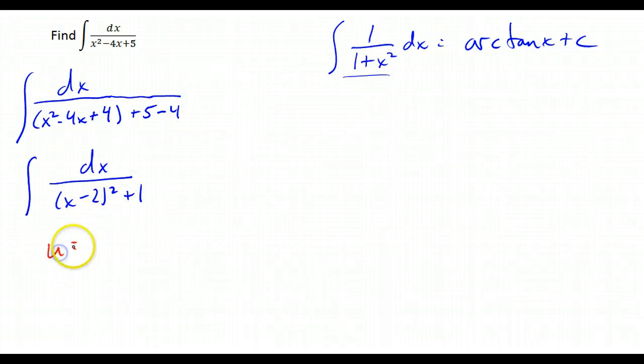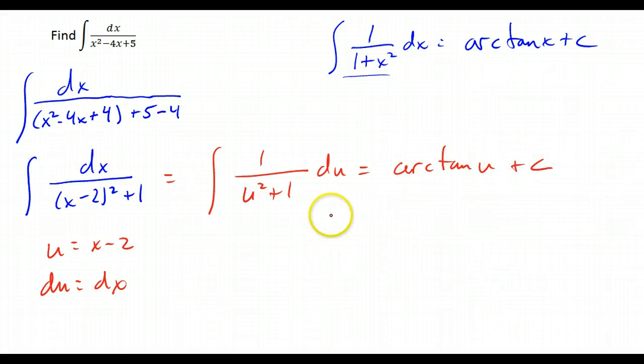So we'll let u equal x minus 2, du is dx, and I can rewrite this as 1 over u squared plus 1 du, which is the arc tan of u plus c. And rewriting that back in terms of x, that's the arc tan of x minus 2 plus c.